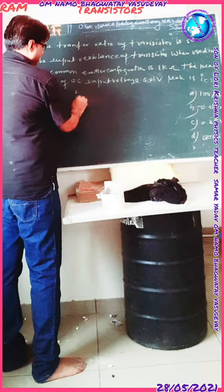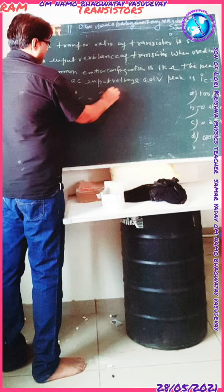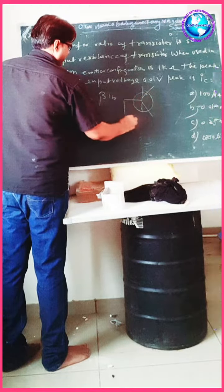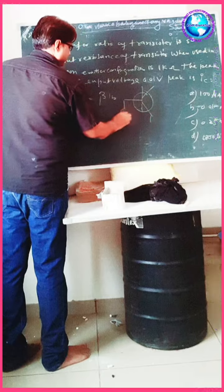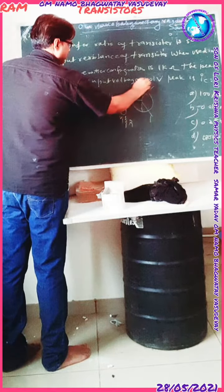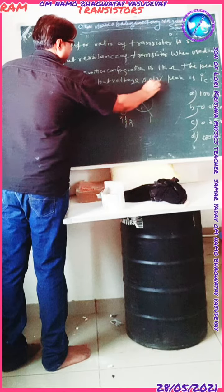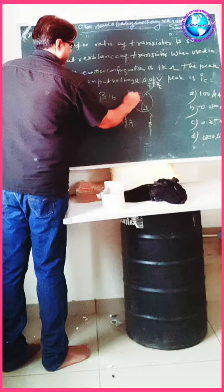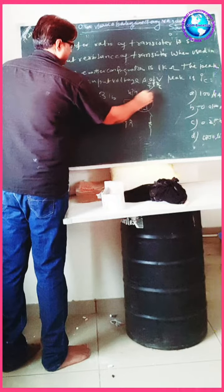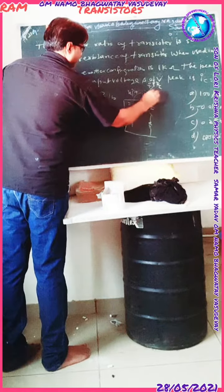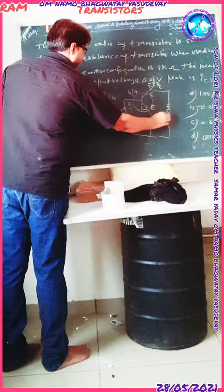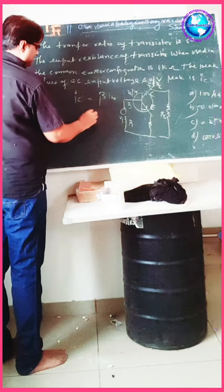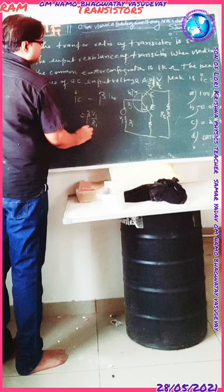Now we know that IC is equal to current gain (beta) into IB. This is the common emitter configuration with an NPN transistor, with VI, RI, RC, base, and collector labeled. Beta is given, that is 50.